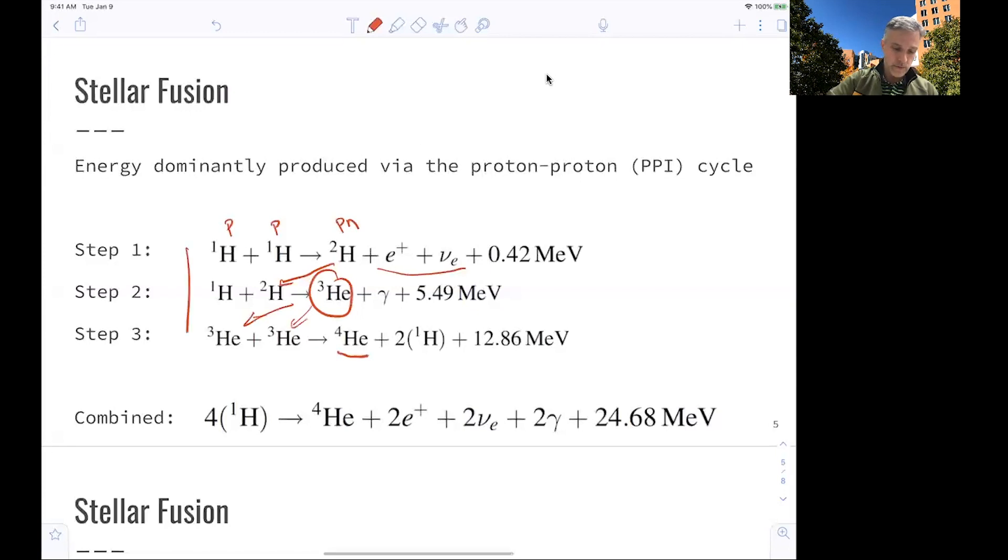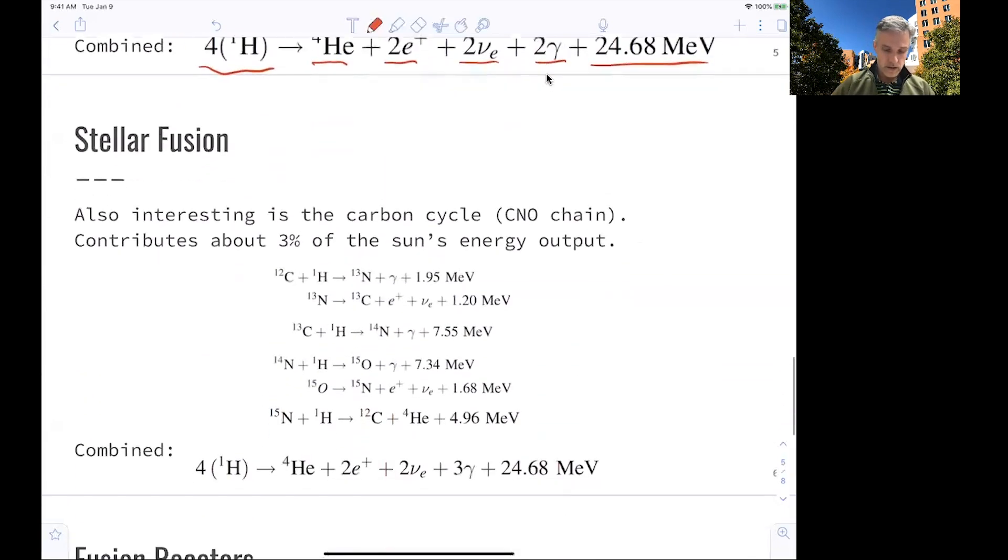So the end product is helium-4 and energy. If you combine all of those three steps, you find that you start with four protons and produce helium-4, positrons, neutrinos, photons, and energy. In fact, this all happens within a hot plasma. The positrons are basically annihilated with electrons, which are part of the plasma, adding another MeV of energy to this.